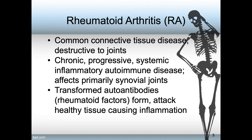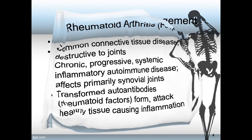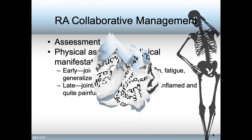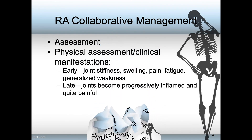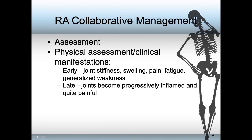Collaborative management for RA includes assessing to differentiate it from other CTDs, including OA. Early physical assessments and clinical manifestations include joint stiffness, swelling, pain, fatigue, and generalized weakness.